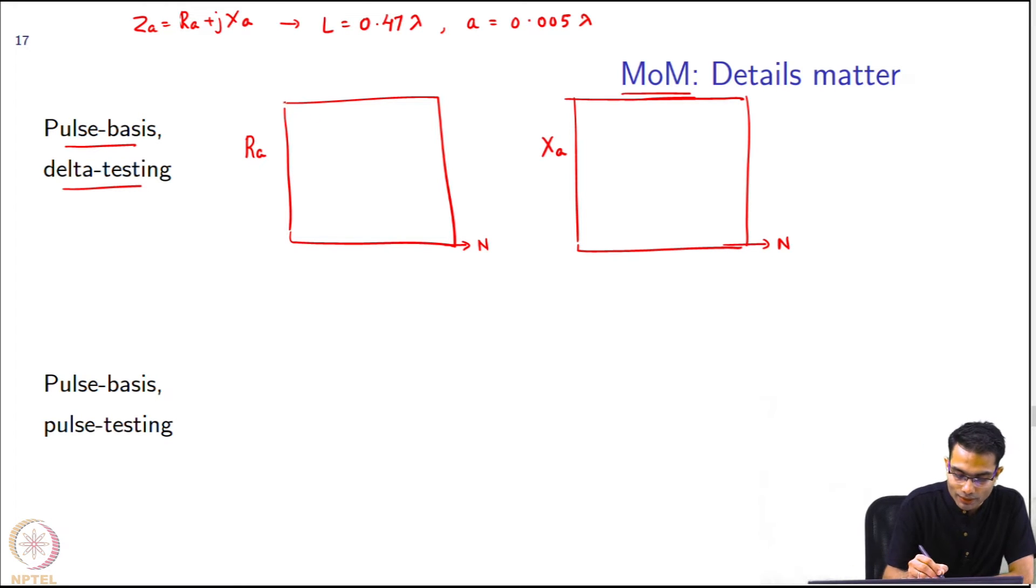Supposing I choose the delta testing functions. With delta testing functions what happens is you get something like this. It begins to converge by the time this is say 120. You can start with something as crude as let us say 20. It begins to converge over here. This is with a delta gap.